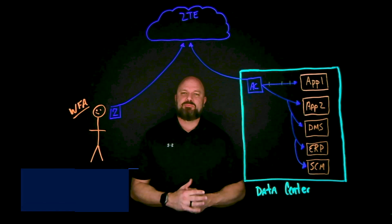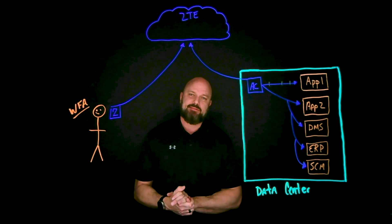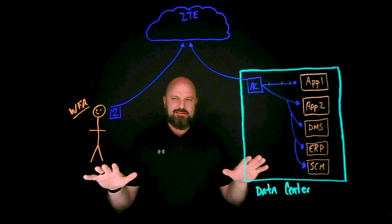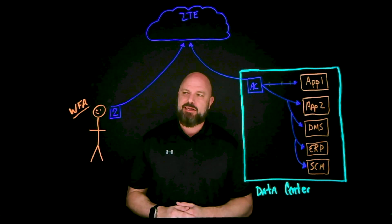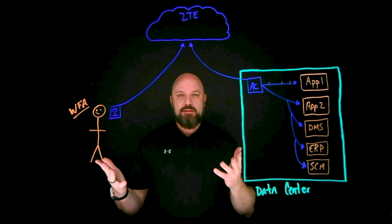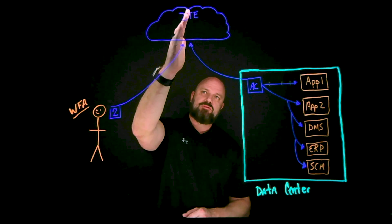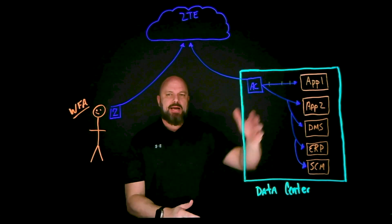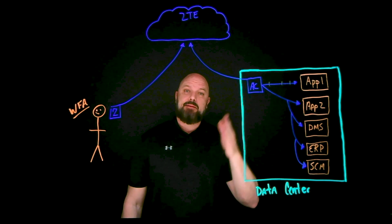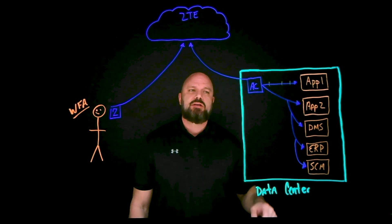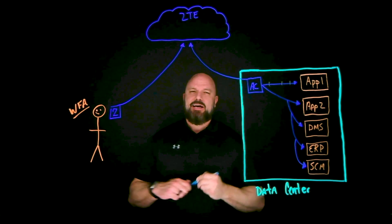My name is Brian Deach and let's tackle business continuity for ZScaler Private Access. Quick level set: your work-from-anywhere population — at home, Starbucks, abroad, and in the office — sends traffic to whatever internal resource they need. That goes to the Zero Trust Exchange, back to the data center or private cloud. Your application connector can talk internally to applications, and it's reaching outbound to the Zero Trust Exchange.